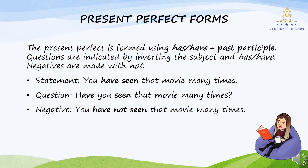Present perfect. The present perfect form is formed using 'has' or 'have' plus the past participle. Questions are formed by inverting the subject and 'has' or 'have.' Negatives are made with 'not.' Statement: You have seen the movie many times. Question: Have you seen the movie many times? Negative: You have not seen the movie many times.